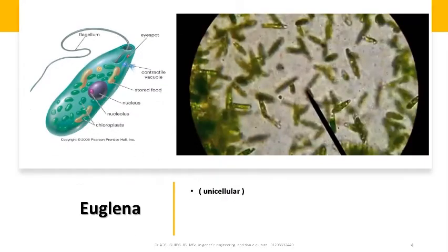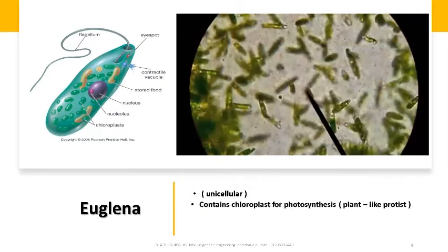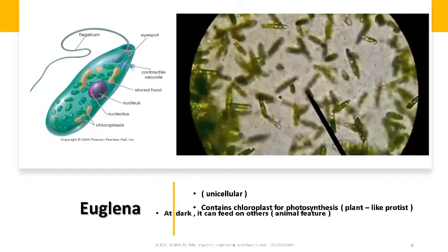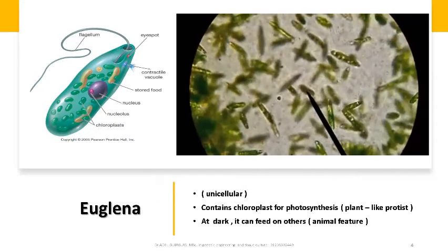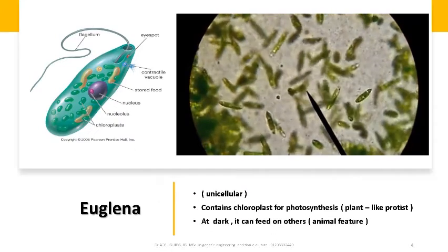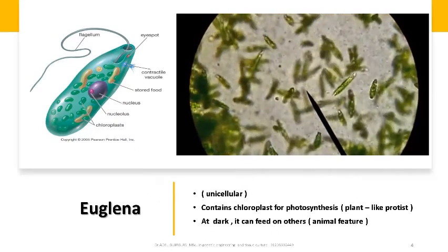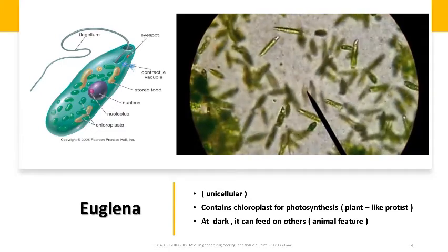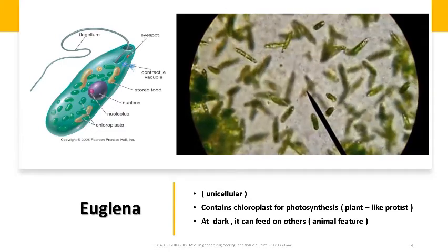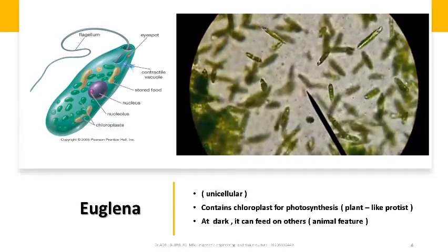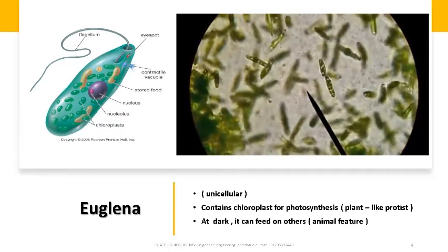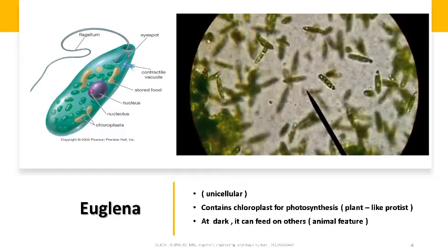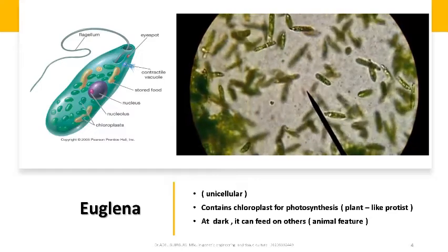Euglena is a unicellular plant-like protist. It contains chloroplasts for photosynthesis. However, in the dark it can feed on others by ingesting — this is an animal feature.